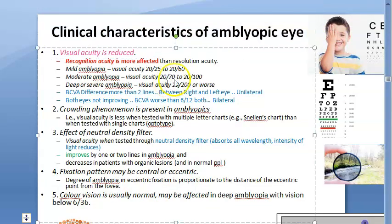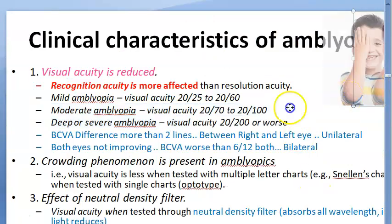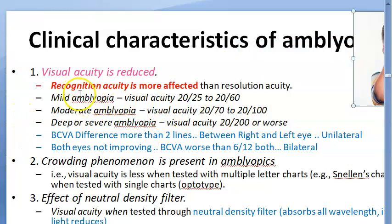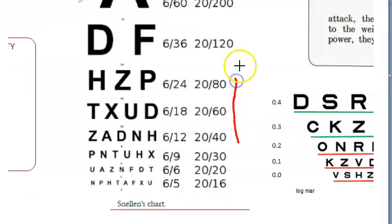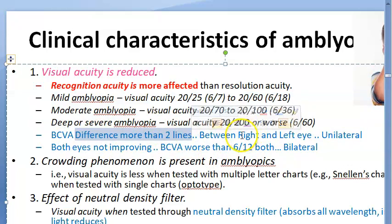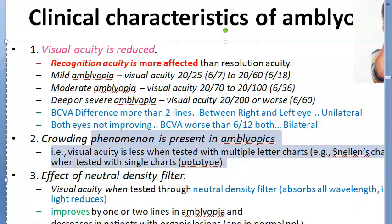The clinical features: visual acuity will be reduced in the affected eye. Recognition acuity is more affected than resolution acuity. Amblyopia is graded as mild, moderate, and deep or severe — based on the visual acuity level. Severe is beyond 6/60 (20/200). The difference between both eyes of more than two lines indicates unilateral amblyopia. There will be crowding phenomenon: if you ask them to read a full chart they struggle, but with a single letter they may be able to read.